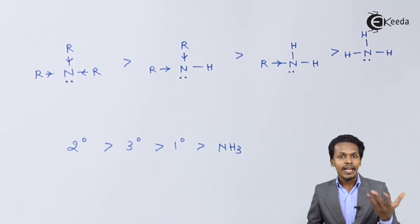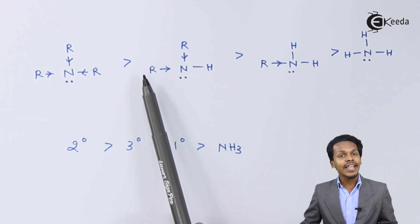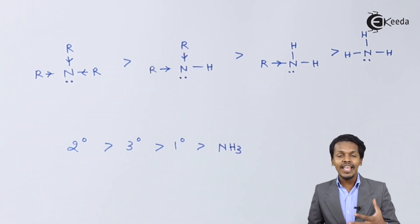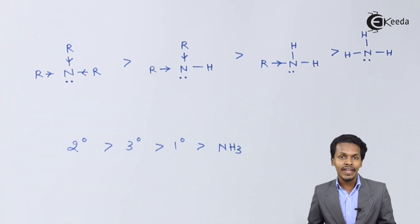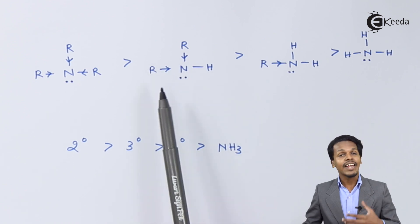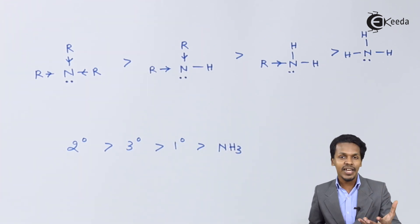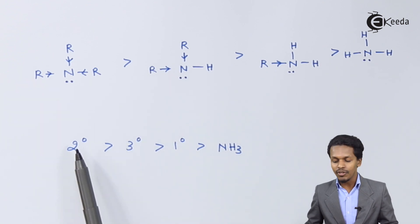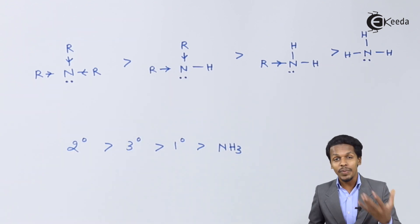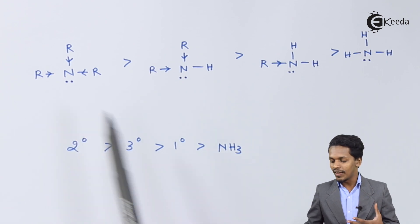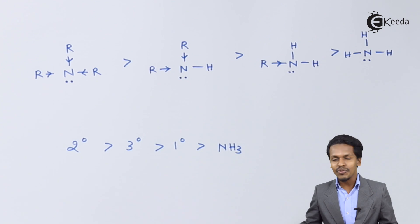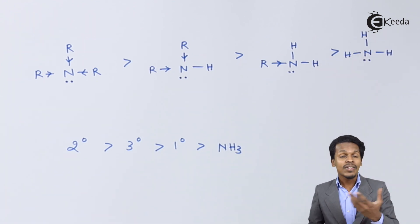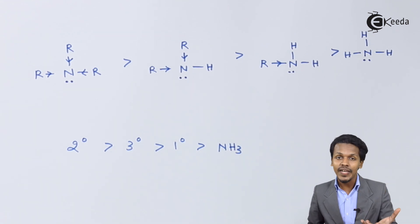Because of this steric hindrance, the tertiary amine is less reactive with acids, making it less basic than the secondary amine. The secondary amine, with only two alkyl groups, has less steric hindrance and is more reactive with acid — making it the most basic in practice. Primary amine is less basic than both, and ammonia, having no alkyl group and no positive inductive effect, is the least basic of all.